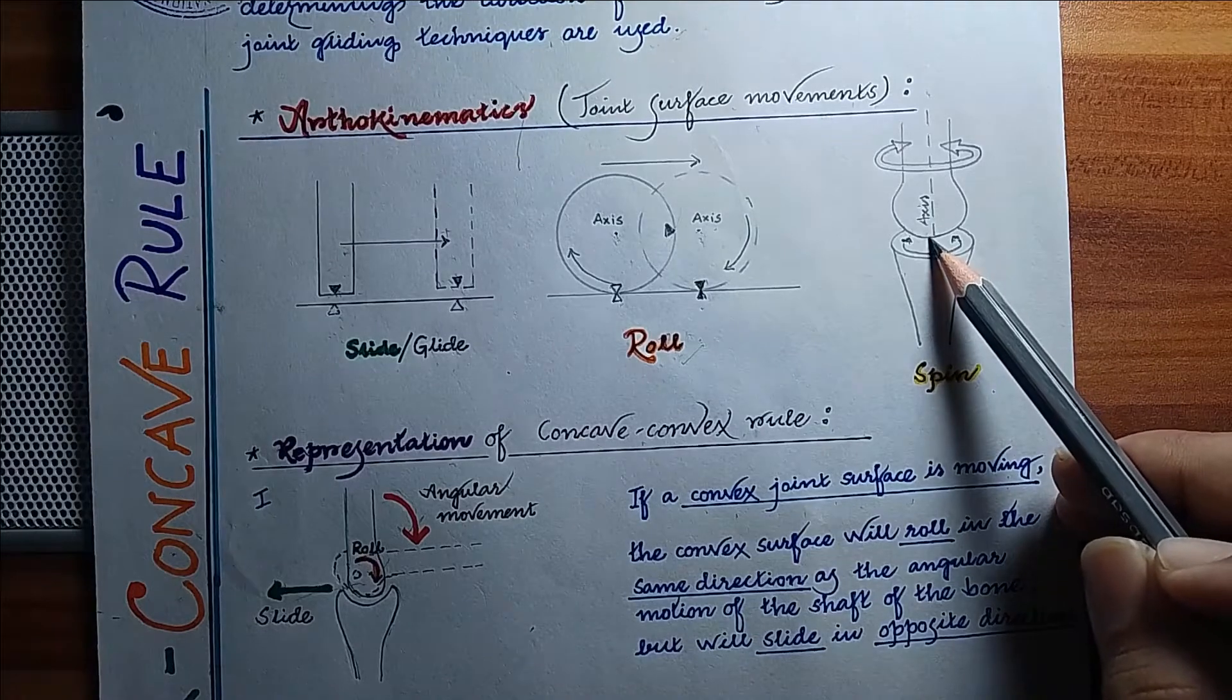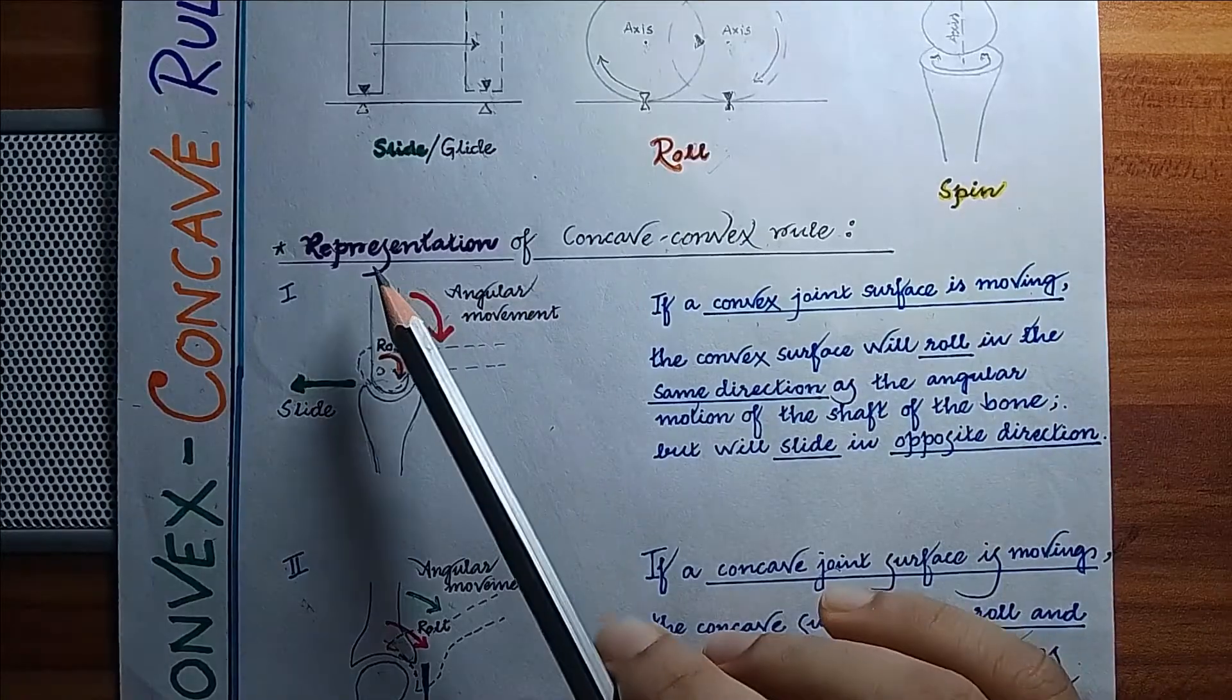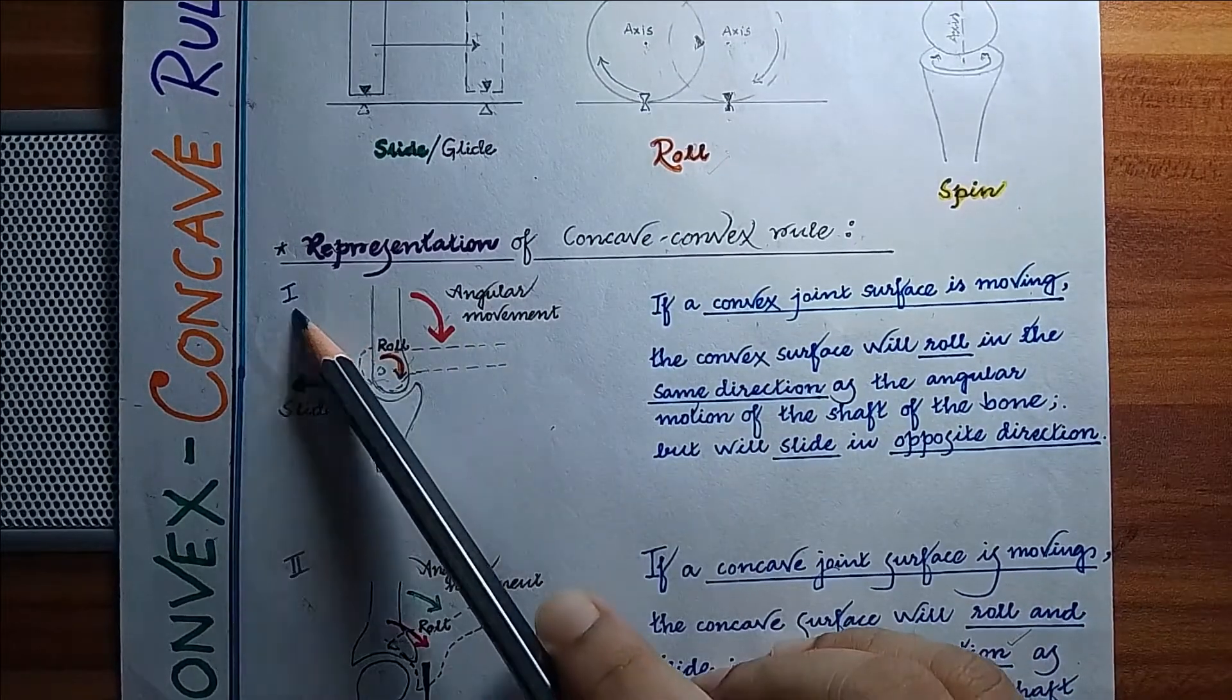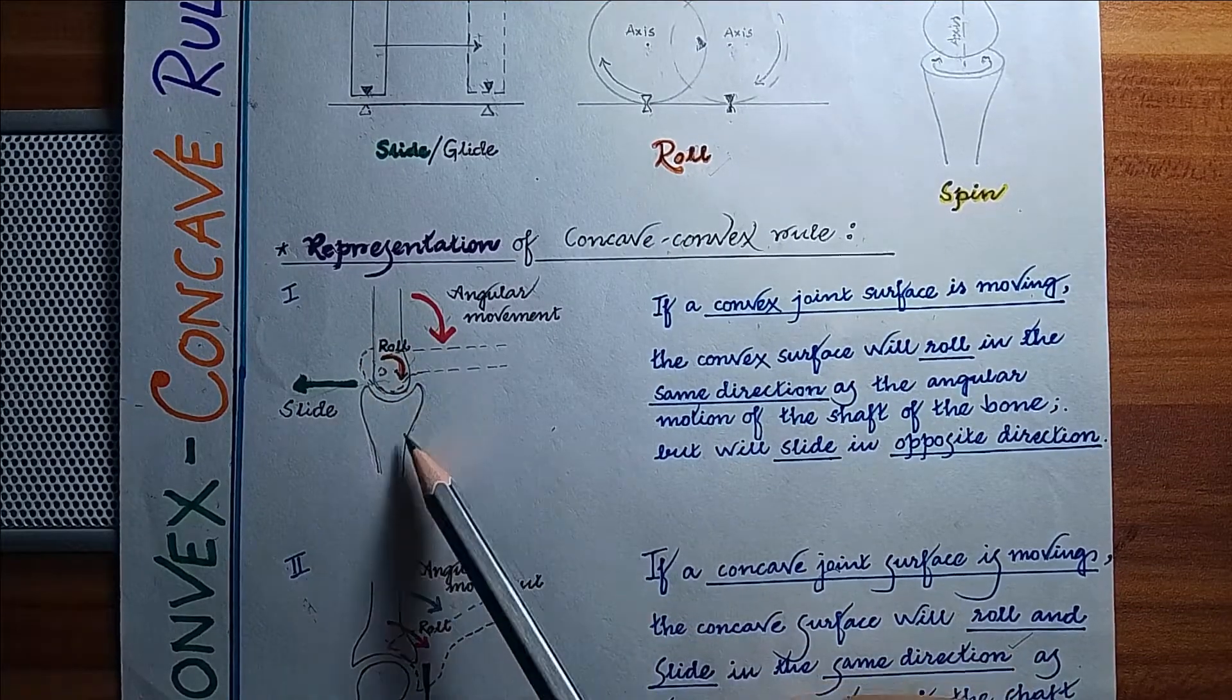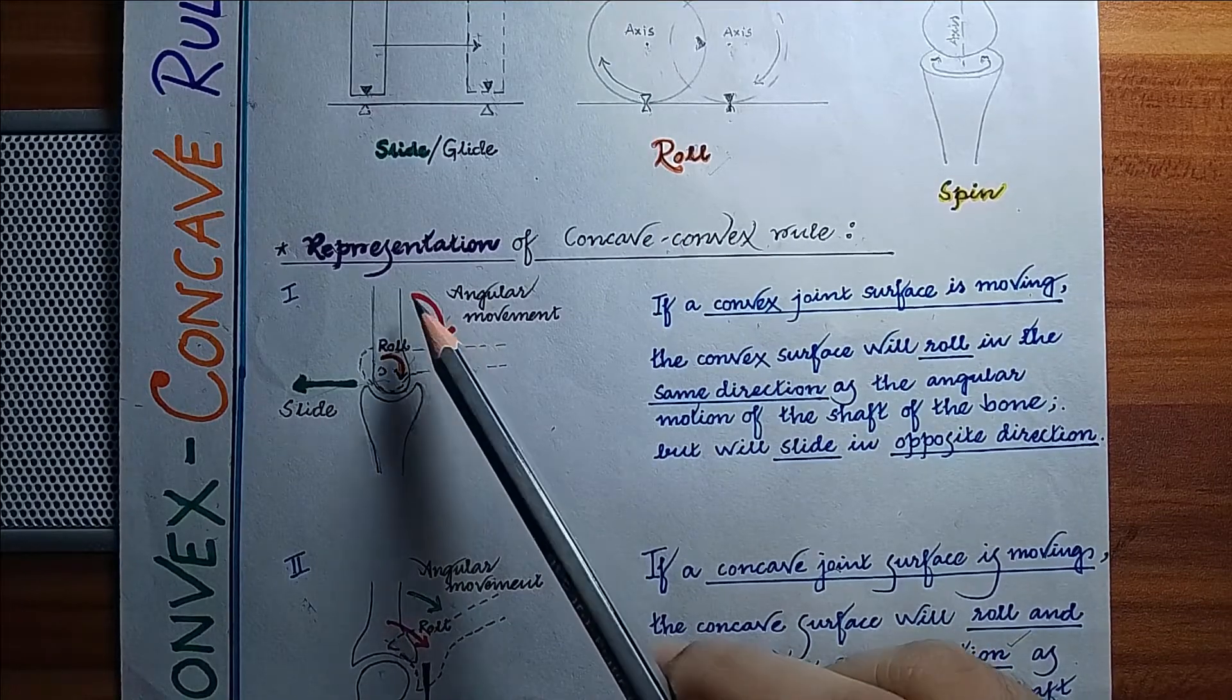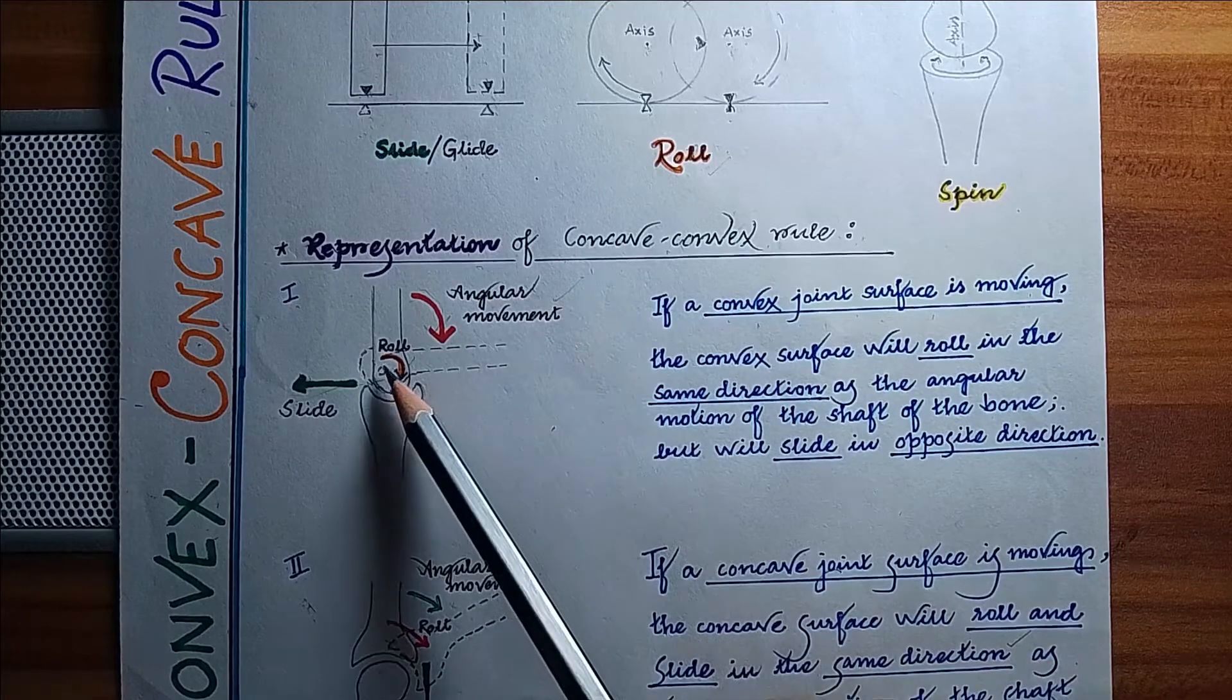Now the representation of the concave-convex rule. Here in the first diagram, you can see a convex joint surface is moving over a concave joint surface. When it is moving, the angular movement is occurring in this direction. In this case, the roll will occur in the same direction but the slide will occur in the opposite direction.